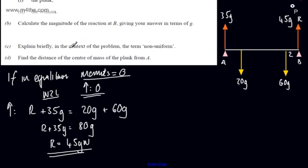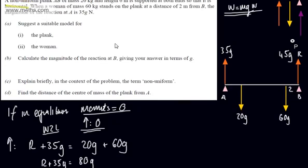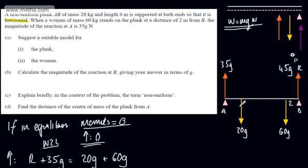In part C it says explain briefly, in the context of the problem, the term 'non-uniform'. We discussed that earlier — it essentially means that the mass is not evenly distributed, therefore we can't put the weight acting down in the centre. It may be in the centre, but not necessarily.